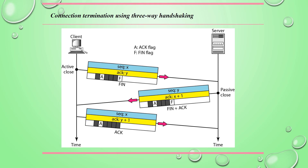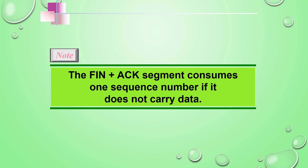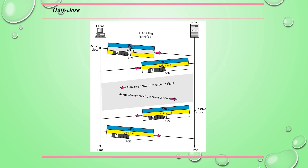For connection termination using three-way handshaking: after receiving a close command from the client process, the client sends a FIN segment in which the FIN flag is set. The figure shows the mechanism — the client performs an active close, the server gives a passive close by sending FIN+ACK, and the client acknowledges. The FIN segment consumes one sequence number but carries no data; the FIN+ACK segment also consumes one sequence number and carries no data.